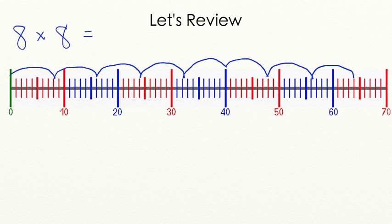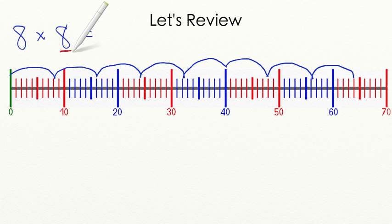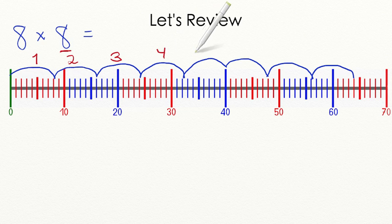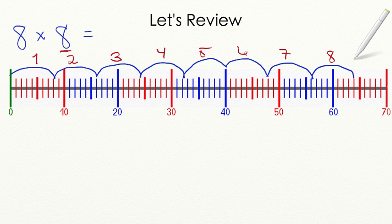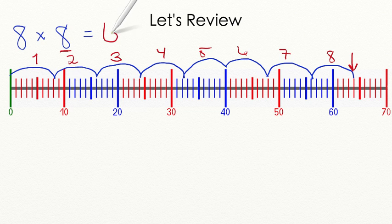Let's take a moment to review what you have learned in today's lesson. Today we discussed two different strategies that you can use to multiply. Our first strategy is using a number line. Let's try 8 times 8 using this number line. I have already grouped out our groups of 8, and we have 1, 2, 3, 4, 5, 6, 7, 8 whole groups. That stops us at the number 64. That means that the product of 8 times 8 is equal to 64.